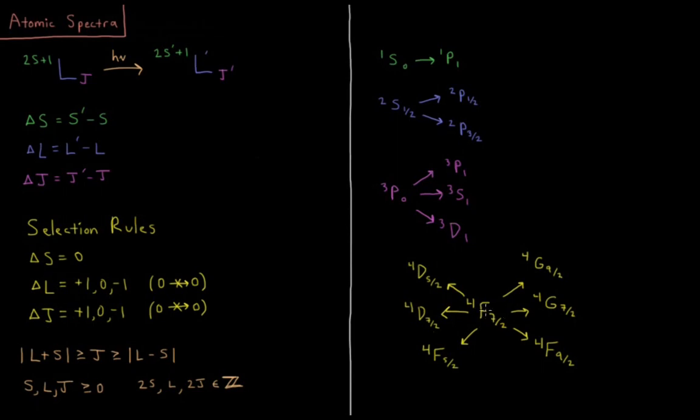So putting all three of those together, the possible transitions, we can go from quartet f7 halves, remembering that we have to stay in a quartet, we have to stay in s equals 3 halves, we can go from quartet f7 halves to quartet g9 halves, quartet g7 halves, quartet f9 halves, quartet f5 halves, in fact I believe we could also go to another quartet f7 halves, as well as quartet d7 halves, or quartet d5 halves.